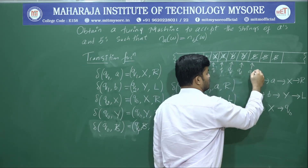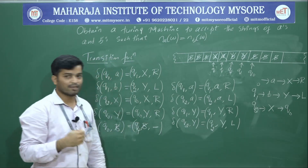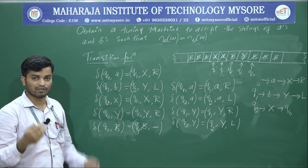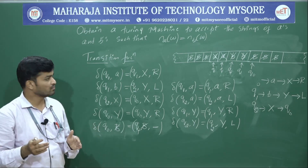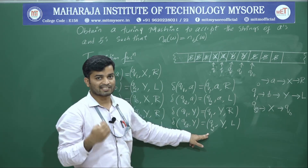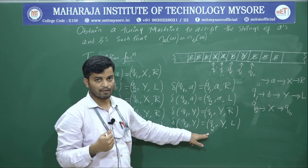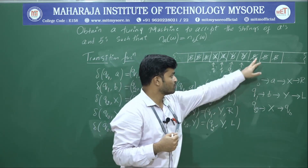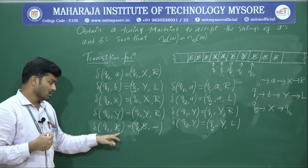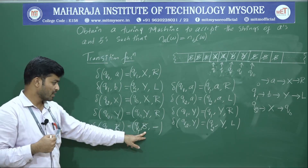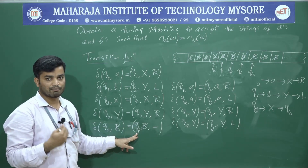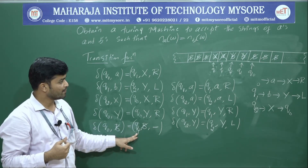In q0, if you get a blank space, all the A's and B's are over — within the string there is an equal number of A's and B's. Therefore, go to the accepting state and accept the string. delta(q0, blank): maintain blank as it is, halt the machine, and go to the accepting state.